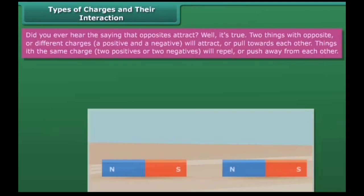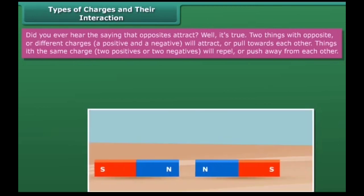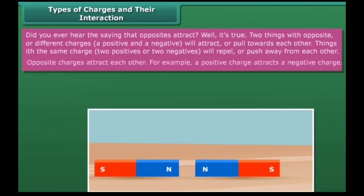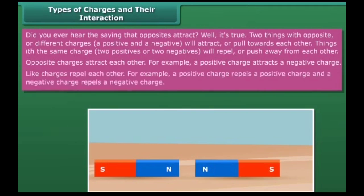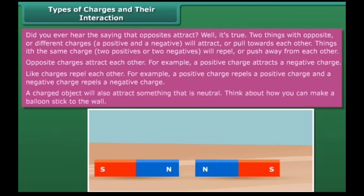Types of charges and their interaction. Two things with opposite or different charges, a positive and a negative, will attract or pull towards each other. Things with the same charge, two positives or two negatives, will repel or push away from each other. Like charges repel each other, and opposite charges attract. A charged object will also attract something that is neutral. Think about how you can make a balloon stick to the wall.